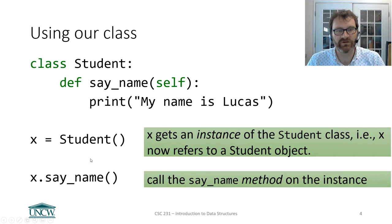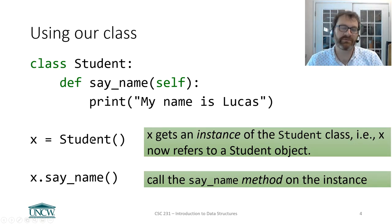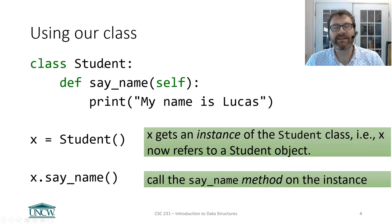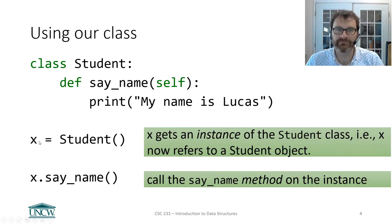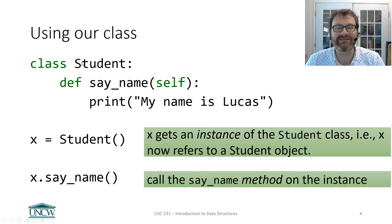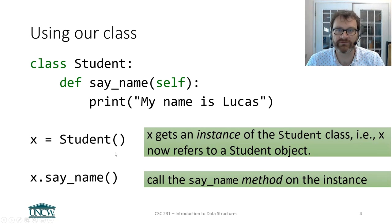Here's how we create an instance of our student class: we call 'Student()' — the name of the class followed by open and close parentheses. This looks like a function call, and in fact it's calling a special method called a constructor. We'll come back to constructors in a later video. This call returns an instance of the Student class and assigns it to the variable x. You can have multiple instances: x gets Student, y gets Student, z gets Student — just like you can with strings or ints.